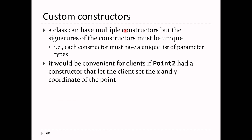You're allowed to add multiple constructors, but they all must have different signatures. Remember what the signature is in Java: the name of the method or constructor followed by the types in its parameter list. For a constructor, they all have the same name — the name of the class. So what this means is your constructors must have different parameter lists.